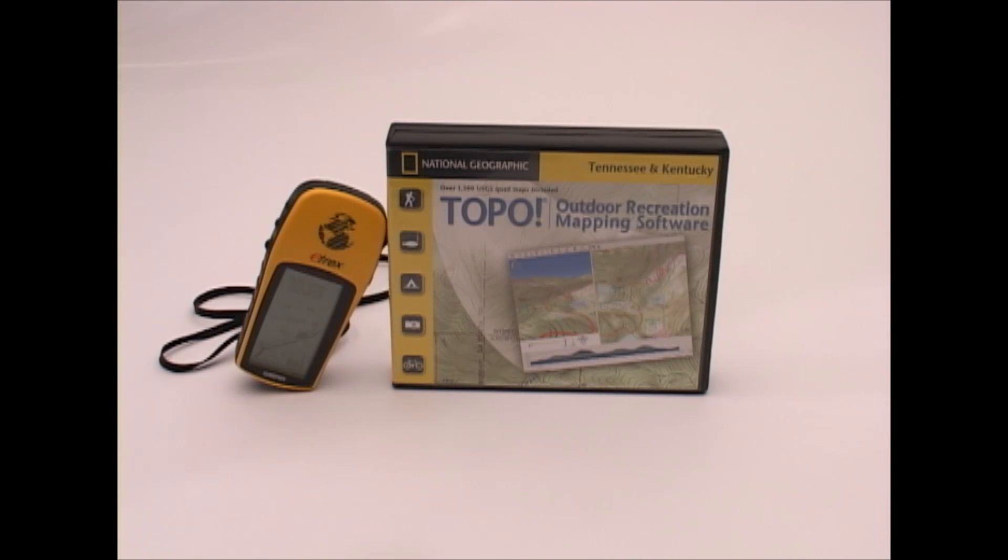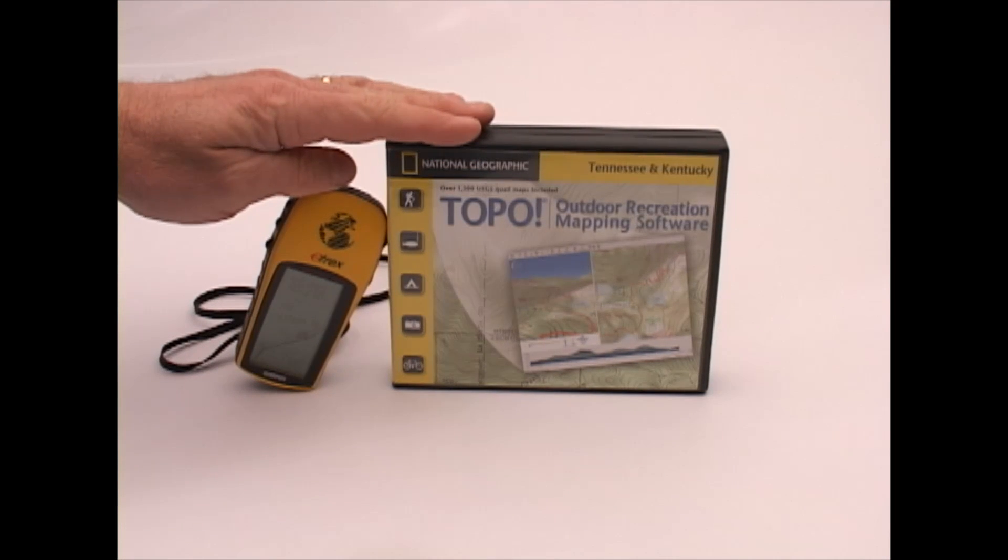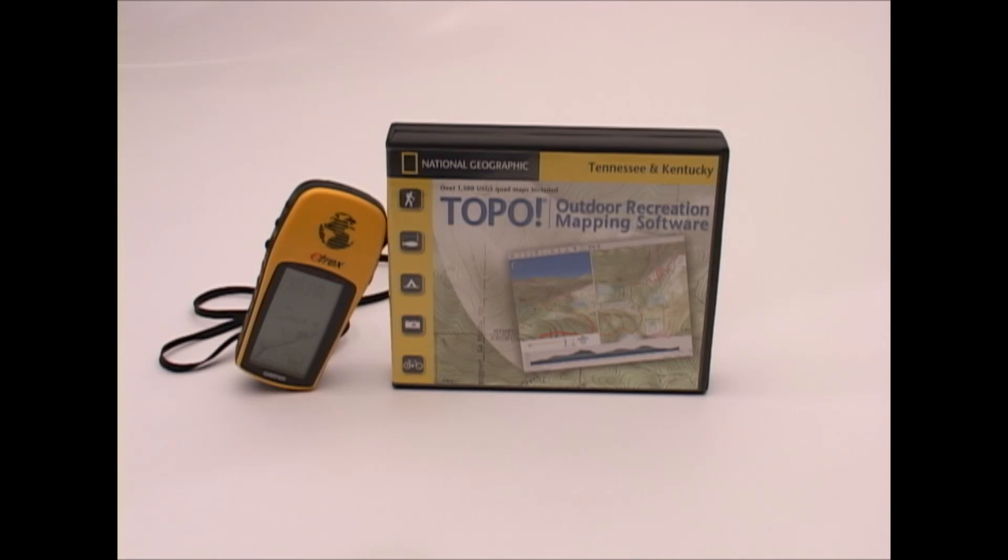But there's another aspect to having a good navigation system, and that is that I'm using it to document what I find. So even if I'm hunting on a piece of property that I know really well, I find that these two pieces combined with the rest of my navigation system give me a really good way of recording what I'm seeing and keeping a record of it that I'll refer back to throughout the season and even in future seasons.